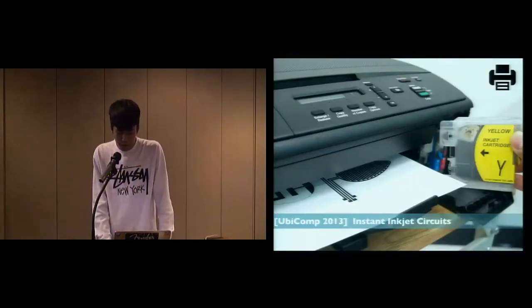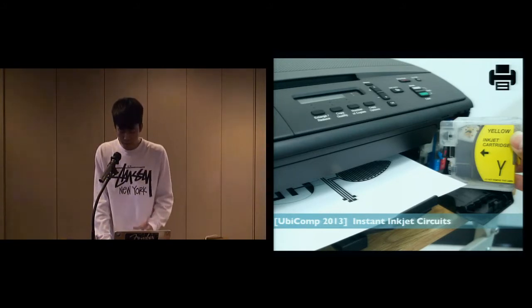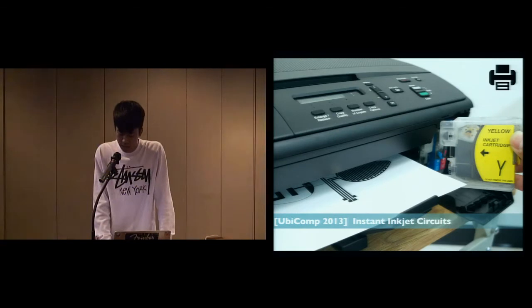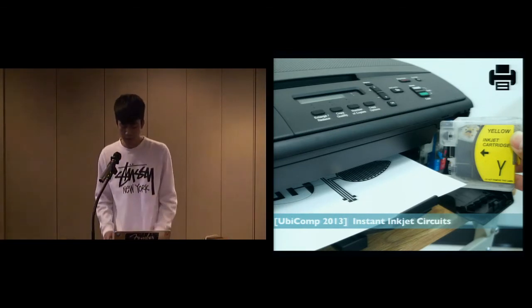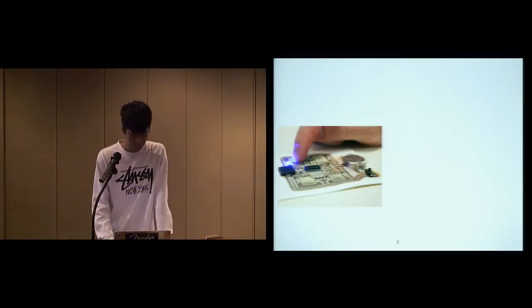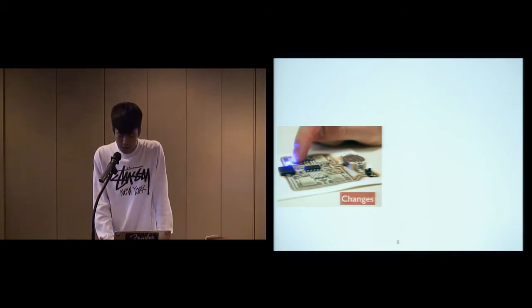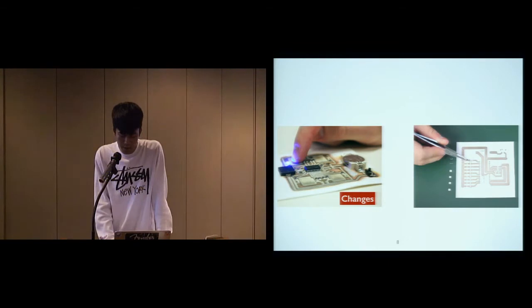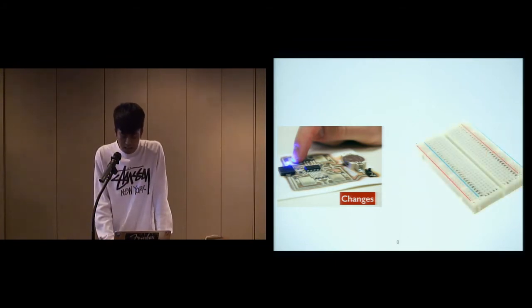Instead of manually connecting wires, printed circuit paper from UbiComp 2013 uses conductive inks to print functional circuits. It eliminates human errors and saves time in connecting the physical wires. However, if you want to change the circuit, typically we need to print out a new piece of paper and then detach and reattach every single component onto it. It takes extra time compared with breadboard.